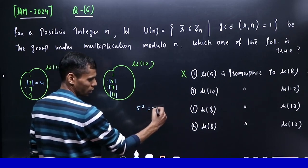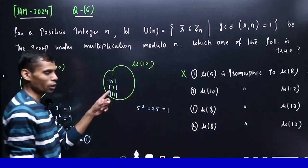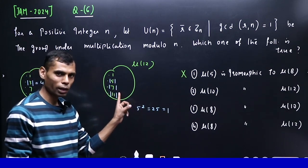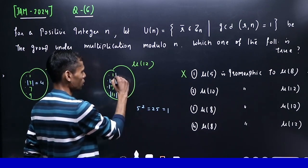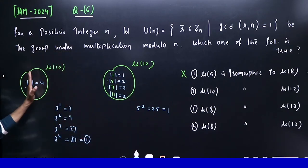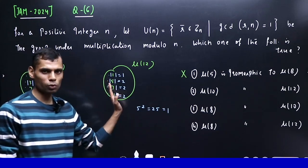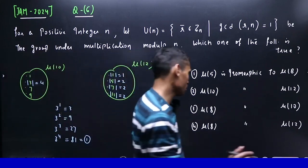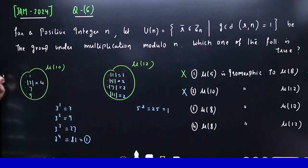Now in μ(12): 5² is 25, modulo 12 gives 1. Similarly, 7² is 49, modulo 12 gives 1. 11² is 121, modulo 12 gives 1. So all three have order 2, and the identity element always has order 1 in any group. This group contains an element of order 4, while this group contains no element of order 4. Therefore they cannot be isomorphic. For isomorphism, characteristics must match. This option is also incorrect.